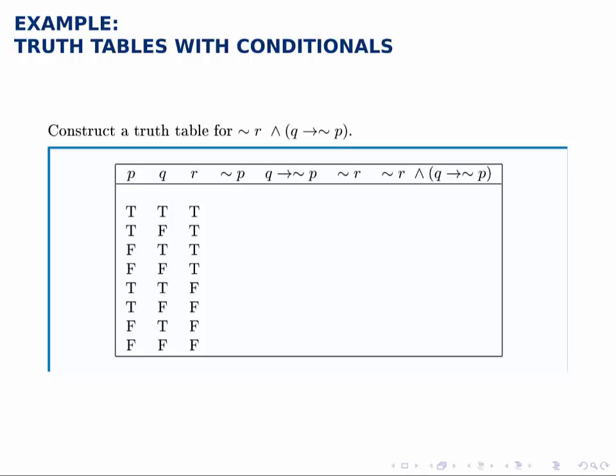But again, since we have three simple statements, we need to include eight rows in our table to account for all the possible combinations of true and false. Those are given to us, though. And now,